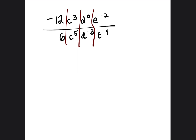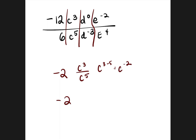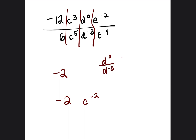Negative 12 divided by 6 is negative 2. Then c to the 3rd over c to the 5th: 3 minus 5 is negative 2, so we get c to the negative 2. Then d to the 0 divided by d to the negative 3: 0 minus negative 3 is 0 plus 3 equals 3, so we get d to the 3rd power.